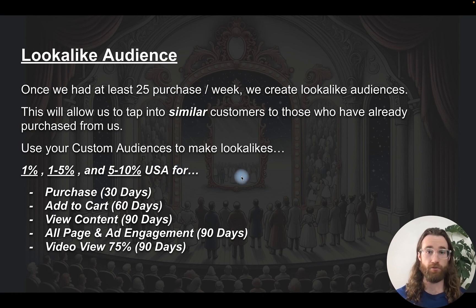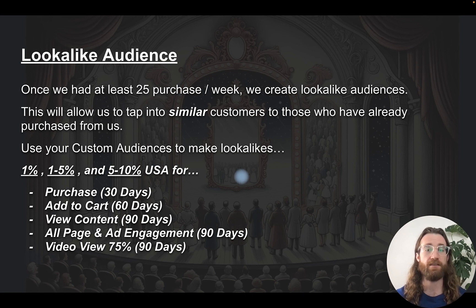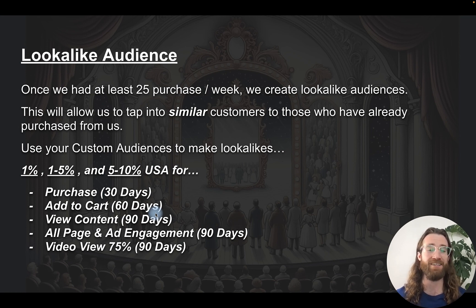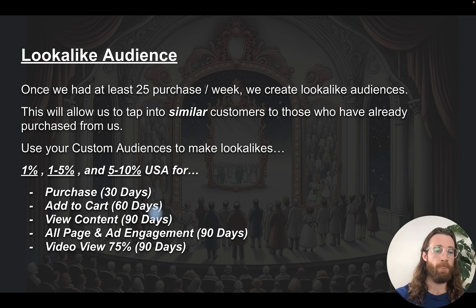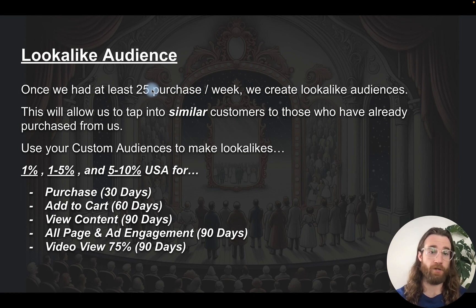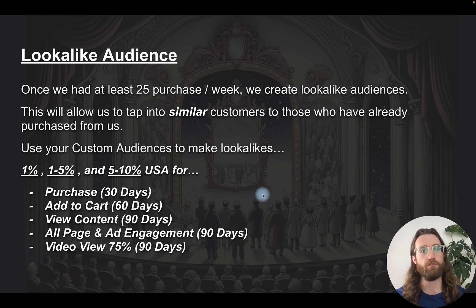Start with your custom audience first, then create a lookalike from it. Create a 1%, 1–5%, and 5–10% lookalike for the United States based on: purchases 30 days, add to cart 60 days, view content 90 days, all page and ad engagement 90 days, and video view 75% for 90 days. The 25-per-week rule applies to whatever action you're optimizing for.